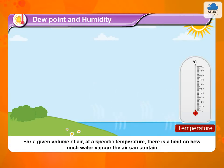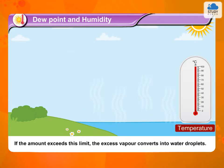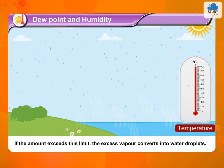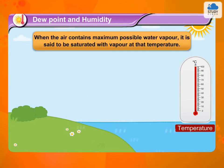For a given volume of air at a specific temperature, there is a limit on how much water vapor the air can contain. If the amount exceeds this limit, the excess vapor converts into water droplets. When the air contains the maximum possible water vapor, it is said to be saturated with vapor at that temperature.